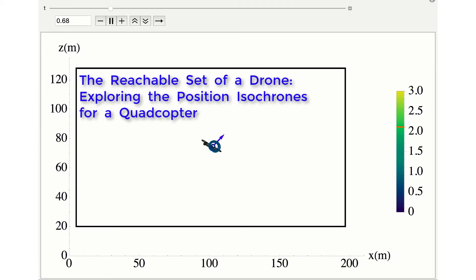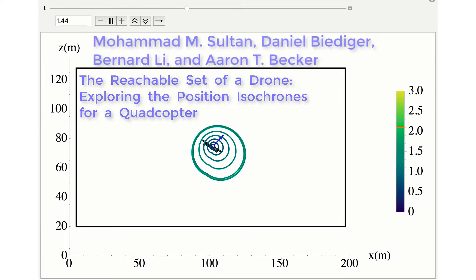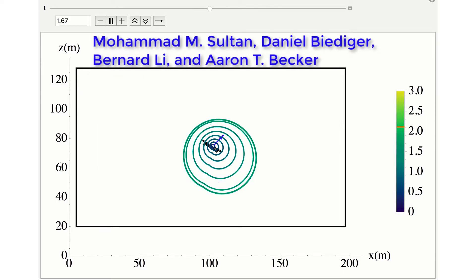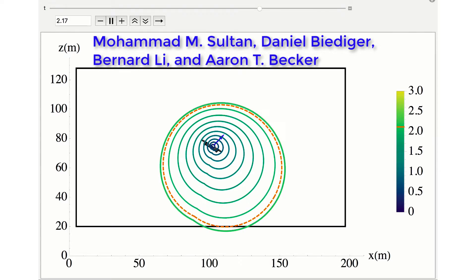That's exactly what we solve in our paper. Our contribution is to calculate the time-limited reachable set, the set of all possible position states reachable by the quadcopter in time t. These sets use equal-time contours to show the reachable set. These contours are called isochrones.